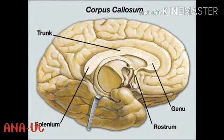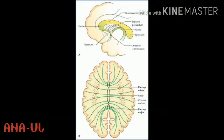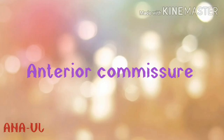Finally, the posterior end is a thickened enlargement called the splenium. These are the parts of the corpus callosum. When traced laterally, the fibers of the genu curve forward into the frontal lobe and form the forceps minor. The fibers of the body extend laterally as the radiations of the corpus callosum, and the fibers from the splenium run backwards into the occipital lobe and form the forceps major.